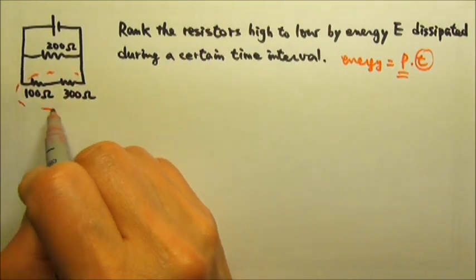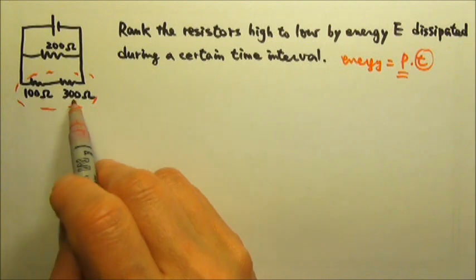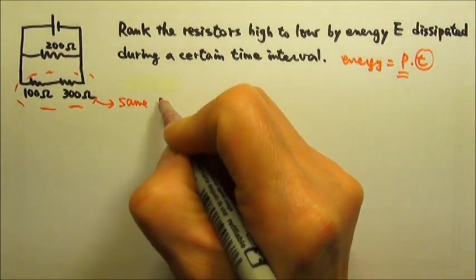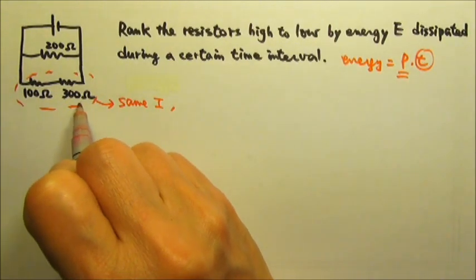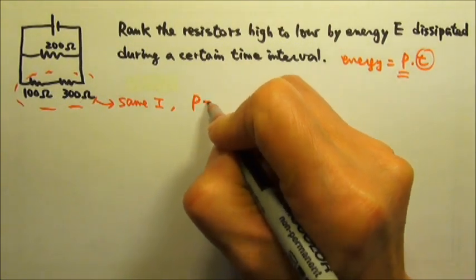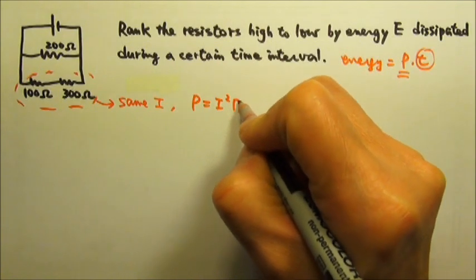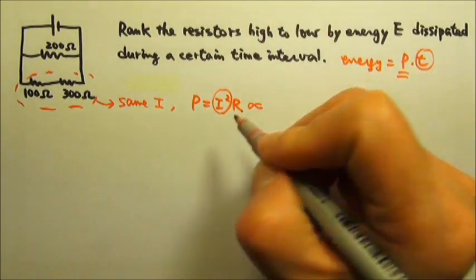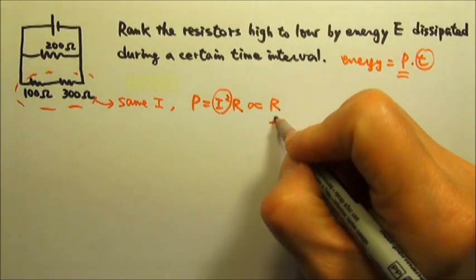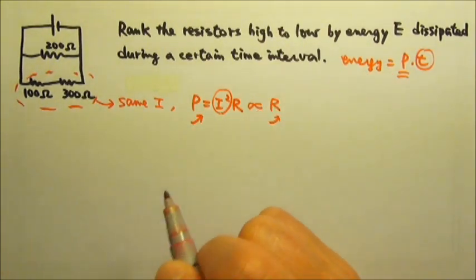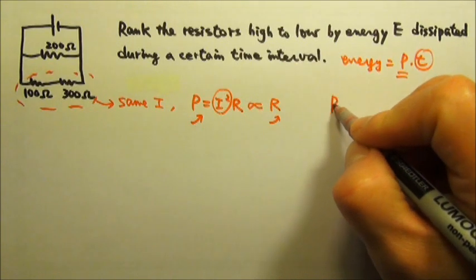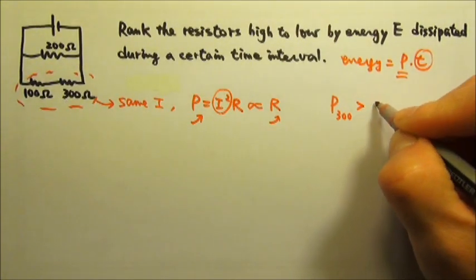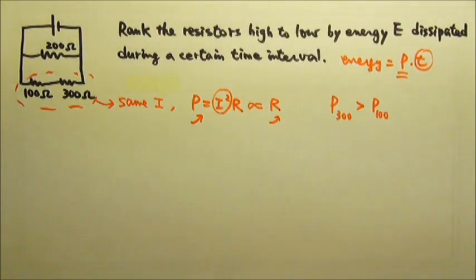Let's first look at these two resistors. They are in series, so they have the same current. That means to compare their power, it's convenient to use P equals I squared R. Because they have the same current, power will be proportional to R, so the one with a larger resistance consumes more power. That means the power of 300 ohms is higher than the power consumed by 100 ohms.